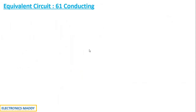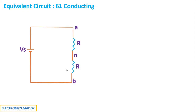Now we will draw the equivalent circuit. The positive voltage Vs is connected to phase A and the negative voltage Vs is connected to phase B. The load resistance values are all equal to R. The neutral point is also considered. The equivalent circuit is drawn by replacing conducting thyristors as short circuits and non-conducting ones as open circuits, so there is no phase C in this circuit.